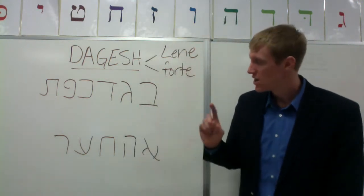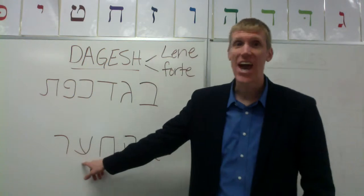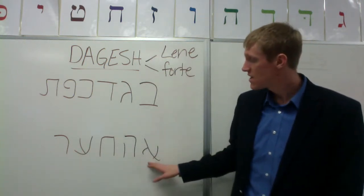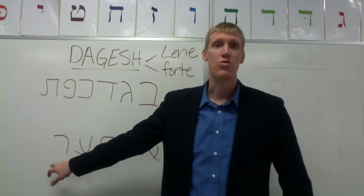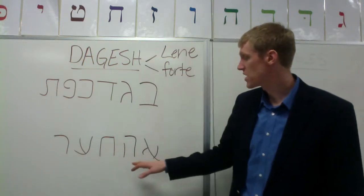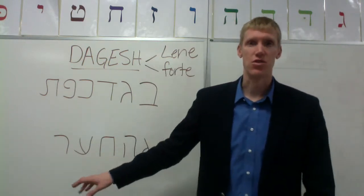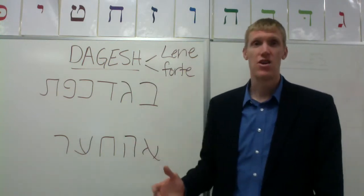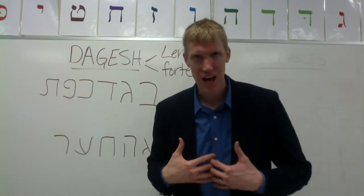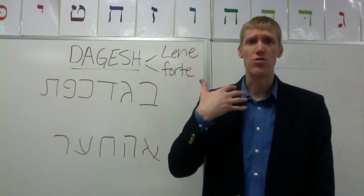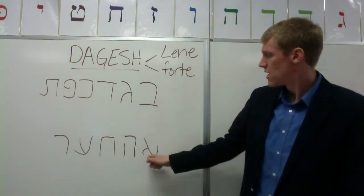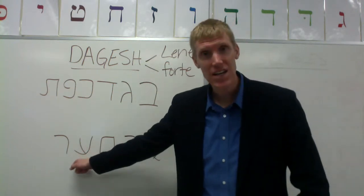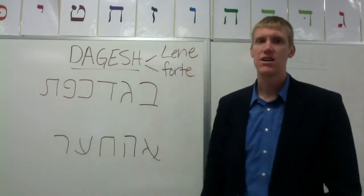Except none of these letters can take any dagesh whatsoever — forte or lene. These five letters are the guttural letters. Some of them are also weak letters, but these five are guttural. They're called the guttural letters because they're pronounced with some kind of guttural sound, often back in the throat. So the aleph, the hey, the khet, the ayin, and the resh cannot take a dagesh.